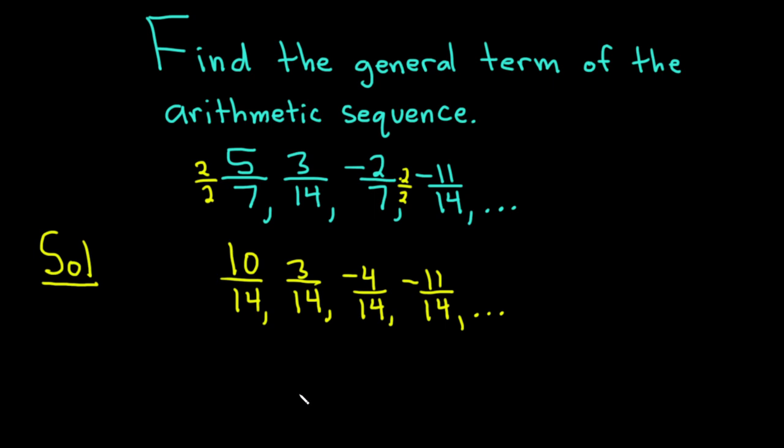So to find the general term, we need a few things. We need the first term, and we need the common difference. So a sub 1 is the first term. So in this case, it's 10 over 14.